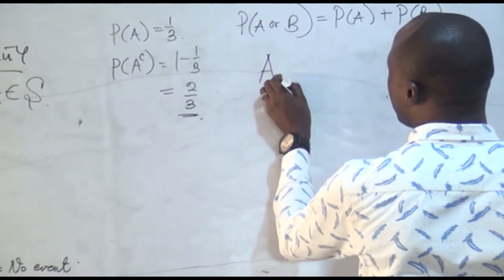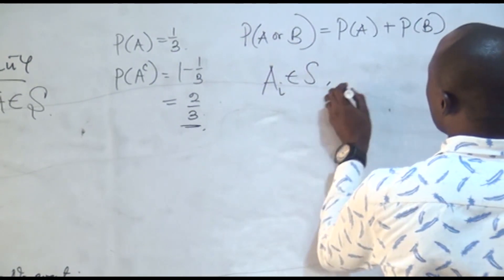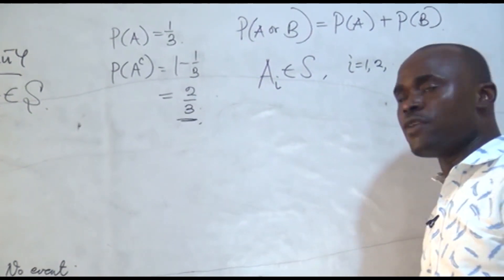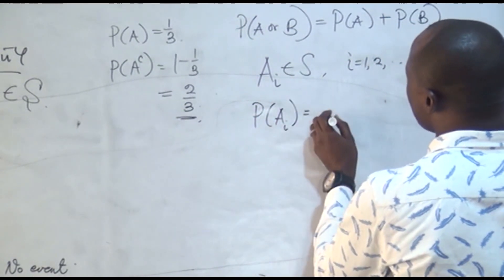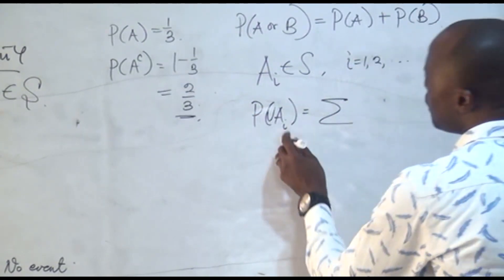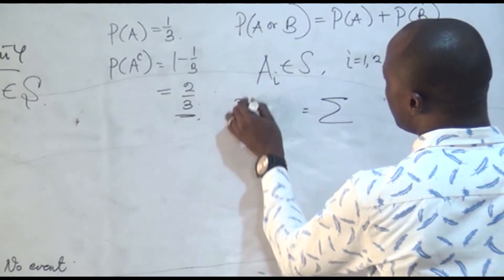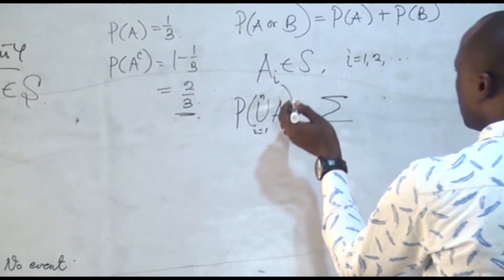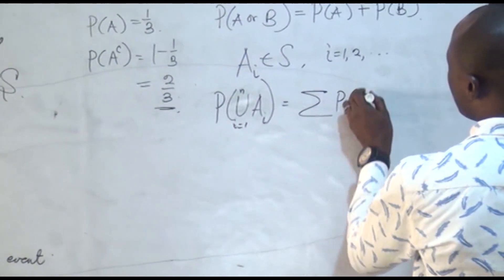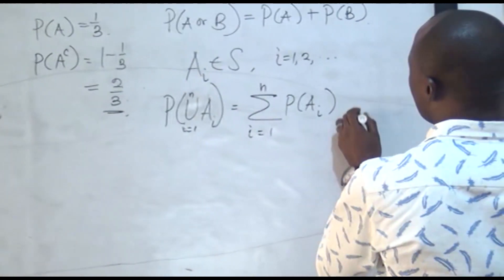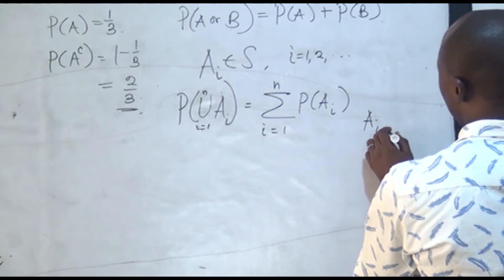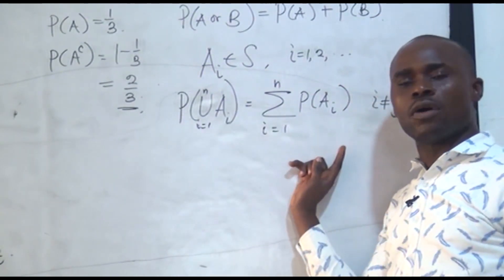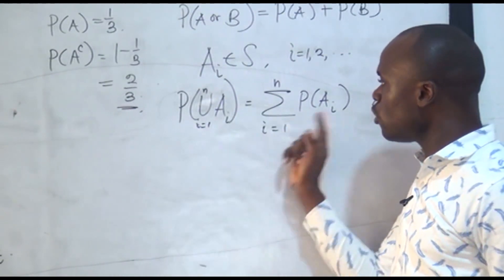It can be more than just two elements. In general, for mutually exclusive events AI where I ranges from 1 to N, the probability of the union of all AI is simply the sum of the individual probabilities of each AI, where I is not equal to J. So when you have more than one mutually exclusive event, all you do is add their probabilities.